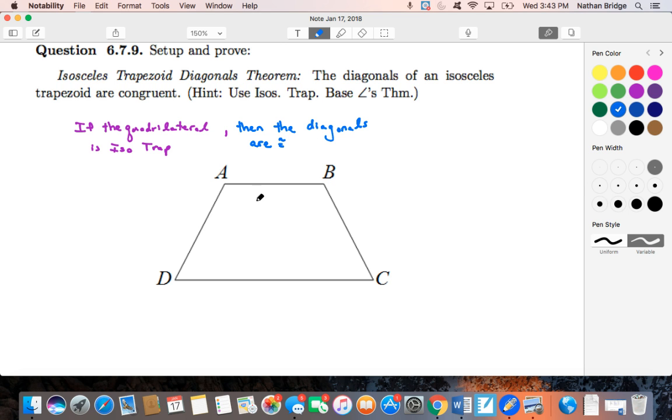Here's our isosceles trapezoid, A, B, C, D, and we are given the fact that this is an isosceles trapezoid. So the first step of our proof is to spell out exactly that, that the quadrilateral A, B, C, D is an isosceles trapezoid.